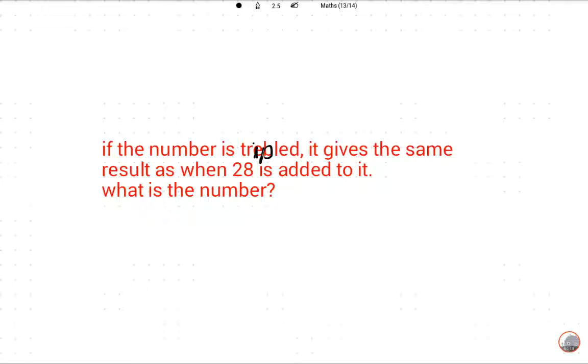It is a simple question. So what is the number? The number is x. If it is tripled, 3x gives the same result, meaning equal to the number plus 28.